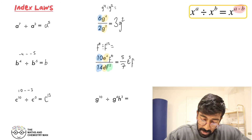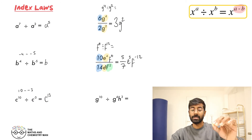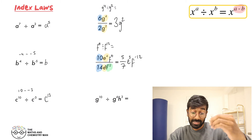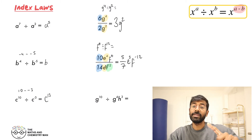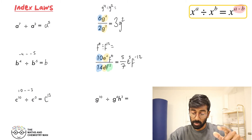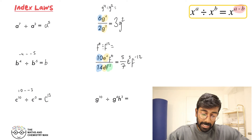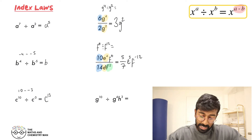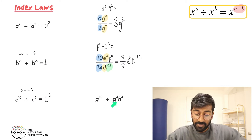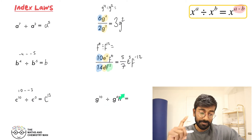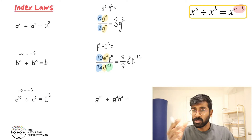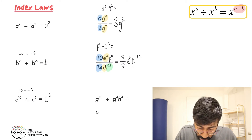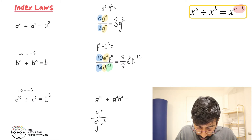So you'll notice that because the F was in the denominator, it's going to carry a minus power — it'll be minus 12. Take that into the next question as well: G to the 10 divided by G to the 4 and H to the 3. I'm going to turn it into a fraction — G to the 10 over G to the 4 and H to the 3 — so it's a bit easier to see.